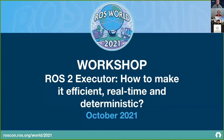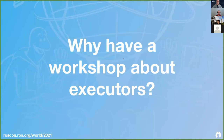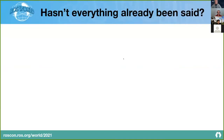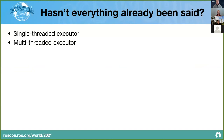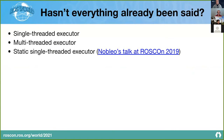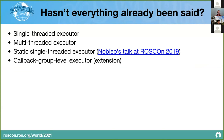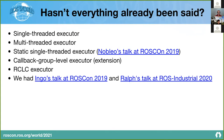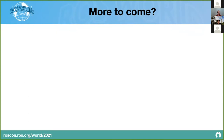Some of you may ask why we have a workshop about executors — hasn't everything already been said? Let me try to summarize: there's a single-thread executor, a multi-threaded executor, a static single-thread executor presented by Nobleo at ROSCon 2019, a callback group level executor as an extension, and the rclc executor developed for micro-ROS, with great talks from Ingo at ROSCon 2019 and Ralph at ROS Industrial 2020.